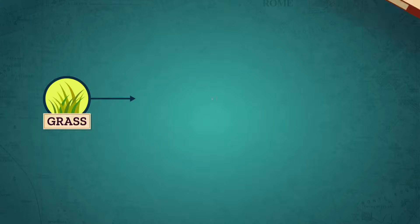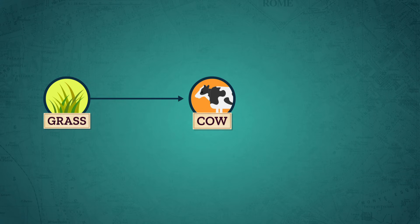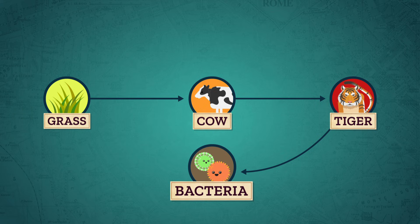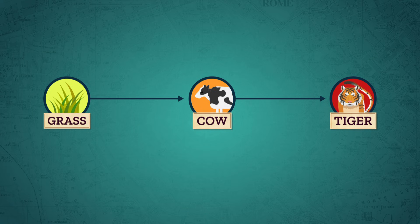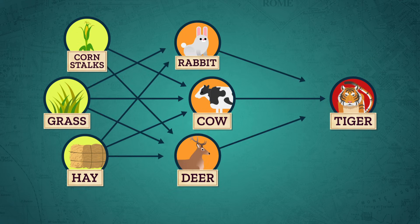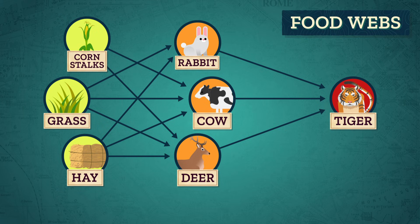In a simple food chain, let's say a cow grazes on some grass. Then a tiger comes along and attacks and eats the cow. When the tiger dies, bacteria breaks down its body, returning it to the soil, where it provides nutrients for plants, like the grass. But food chains are rarely simple. Cows like grass, but they'll also munch on corn stalks and hay. And tigers will eat other animals too.